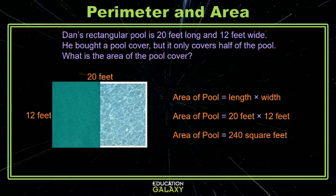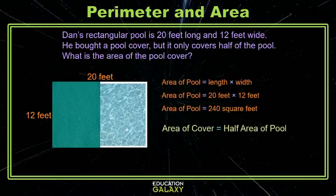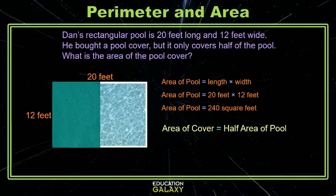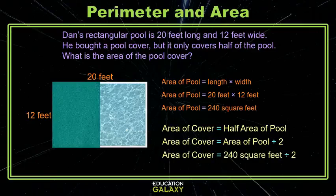We substitute in our dimensions and find that 20 times 12 is 240 square feet. Remember that area has square units, different from perimeter. Now we need the area of the pool cover. We're told it's half the area of the pool. When we cut something into halves, both pieces are the same size, so we divide the pool area by two: 240 square feet divided by two gives us 120 square feet.